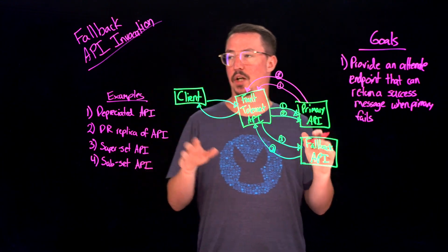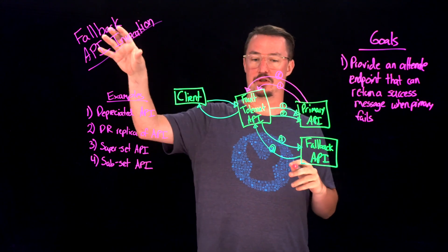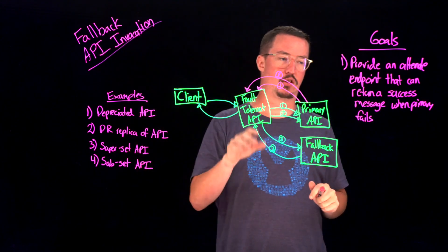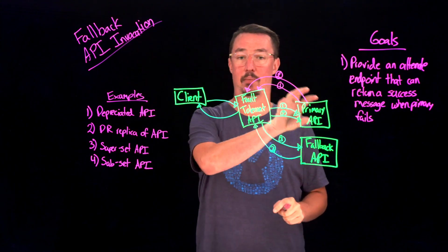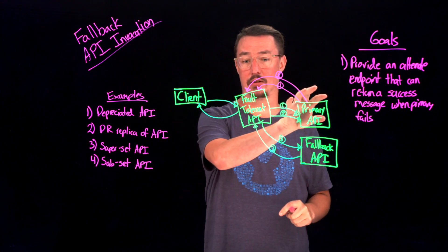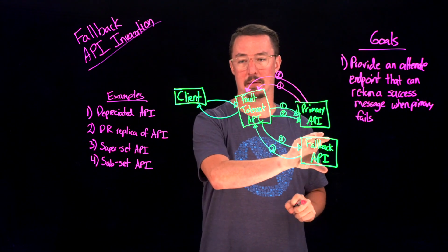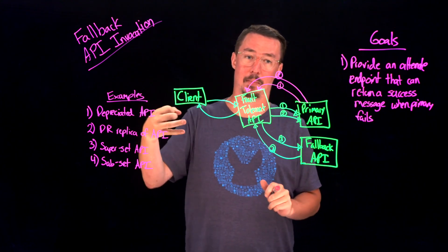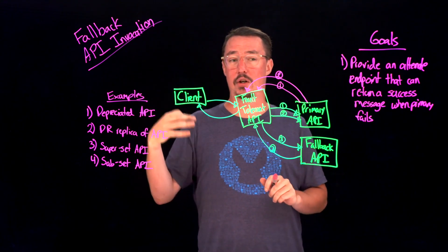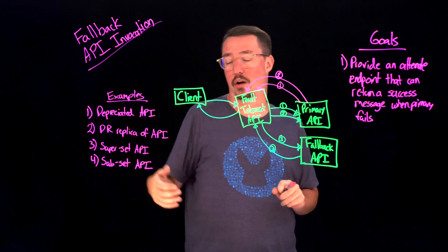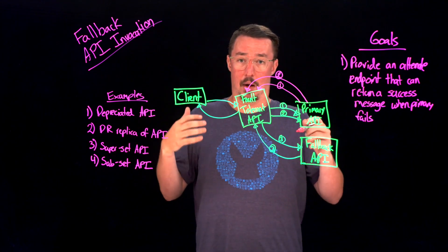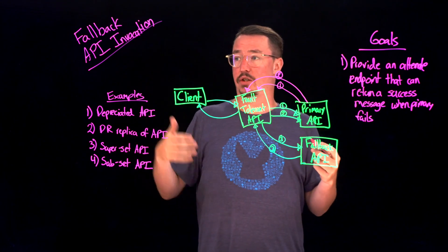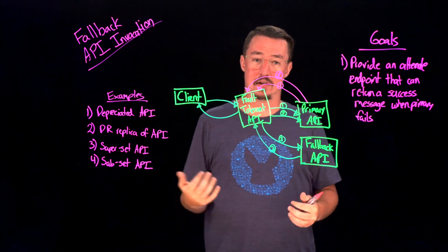So, in summary, our fallback API invocation strategy will basically allow us to provide an alternate endpoint in case our primary endpoint fails. We can call a fallback API. And some examples of those could be deprecated APIs, replicas at a DR site, or a superset or a subset of an API. And with that, we have our fault-tolerant strategy for fallback invocation. Thank you and have a great day.